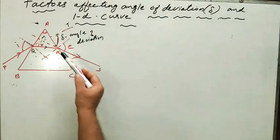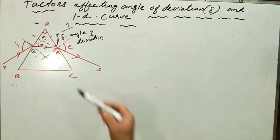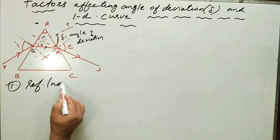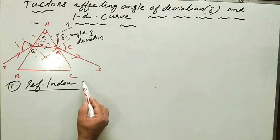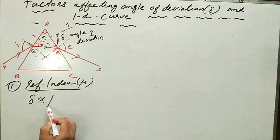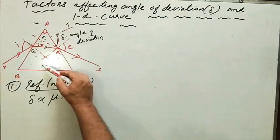In this session, let us study the factors affecting the angle of deviation and the ID curve — a very important topic. The first factor on which delta, the angle of deviation, depends is the refractive index. It has been experimentally found that the angle of deviation increases with refractive index mu. More the refractive index, greater is the angle of deviation produced. So I can write delta is directly proportional to mu, the refractive index of the material of the glass prism. This means more densely the molecules of glass are packed, more will be the refractive index and greater will be the angle of deviation.